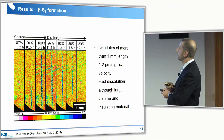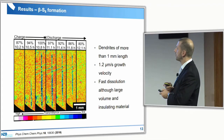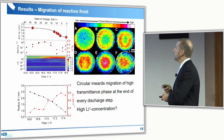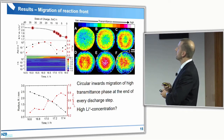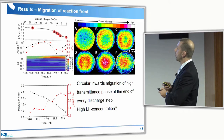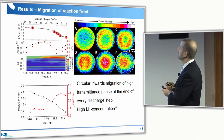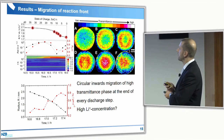Although it is a large volume and an insulating material, this works very fast, and these dendrites can grow with a velocity of 1.2 micrometers per second — they really shoot up. This is another result of our measurements: you can see a reaction front which occurs at the end of every discharge step. From images A to F, you can see it is a circular inward migration of a high-transmittance phase at the end of every discharge.